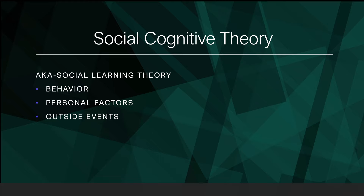Next we have the Social Cognitive Theory, also known as the Social Learning Theory. This theory explains behavior as a result of three reciprocal factors: personal factors, behavior, and outside events. Any change in any of these three factors is expected to determine changes in the remaining ones. One of the theory's key premises is its emphasis on the outside environment, which becomes a source of observational learning.